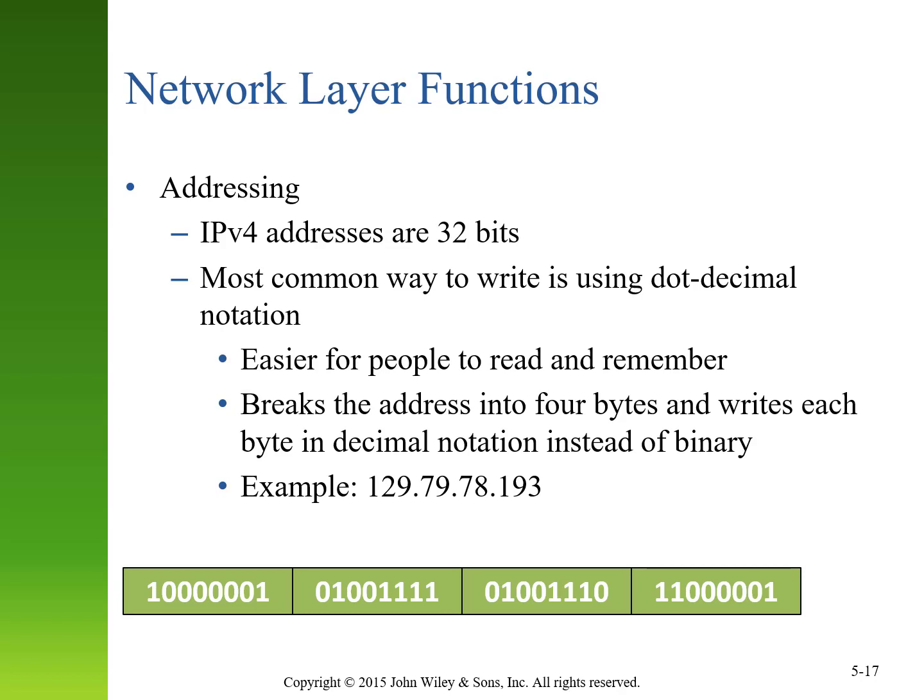In IPv4, addresses are represented by four bytes, or 32 bits. The most common way to write an IP address is four numbers separated by dots, each ranging from 0 to 255 — the maximum decimal value of an 8-bit number. So we break it into four 8-bit numbers, even though technically it is a 32-bit number. For example, an address like 129.79.78.193 is written in binary as four groups of 8 bits.